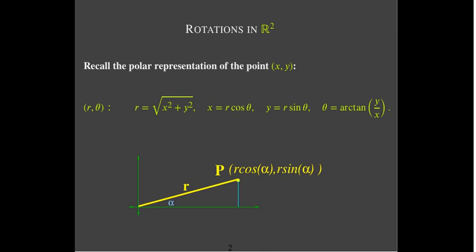To understand rotations, it's very helpful to recall polar coordinates or polar representation. Whenever you have a point in space, it has an x-coordinate and a y-coordinate — you can draw a right triangle. The length of the hypotenuse we're going to call R. The angle made with the positive x-axis we're going to call alpha. From triangle trig, the length of the opposite side will be R sine alpha, and the length of the adjacent side will be R cosine alpha.